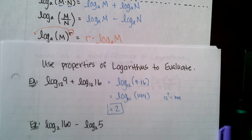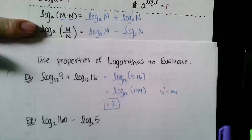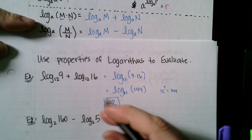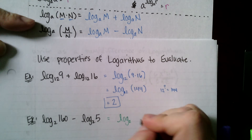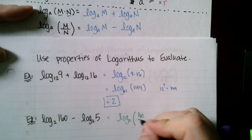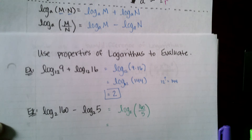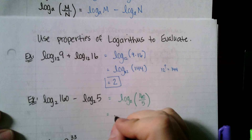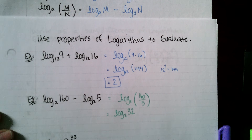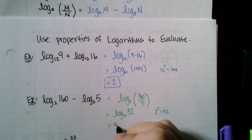Next: log base 2 of 160 minus log base 2 of 5. That's the quotient property of logs, so I can rewrite it as a single log: log base 2 of 160 divided by 5. 160 divided by 5 is 32, so this is log base 2 of 32. This asks 2 to what power gives 32, and the answer is 5.